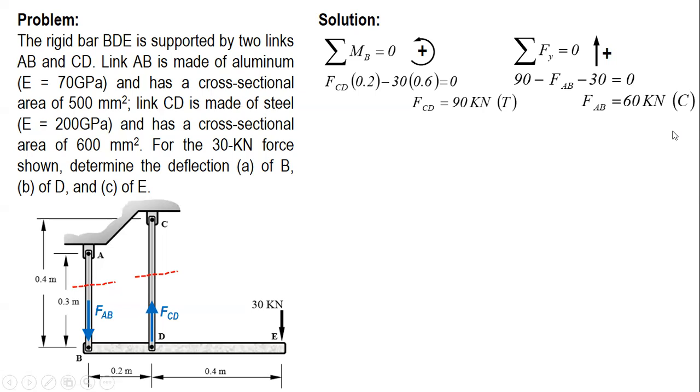Next, since the force is already known, we can compute for the deformation. Since all the other values are given: length, area, modulus of elasticity. For link AB, the length is 0.3 meters, the area is 500, and modulus of elasticity is 70 gigapascal. This is the formula.